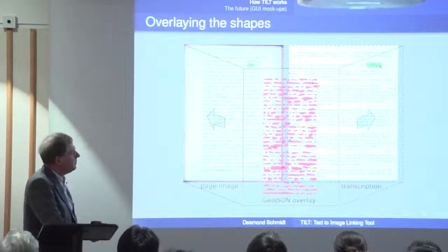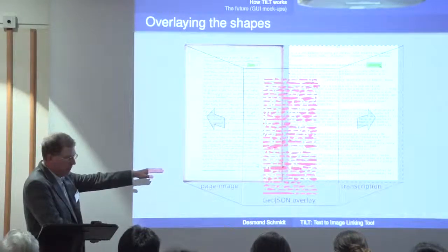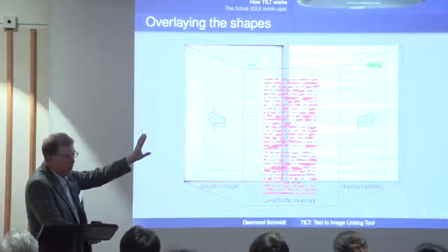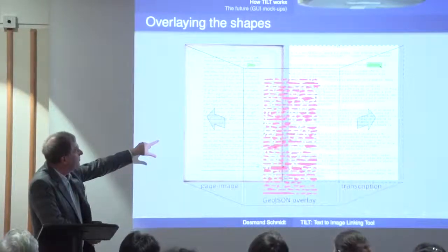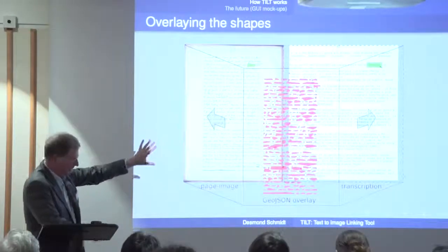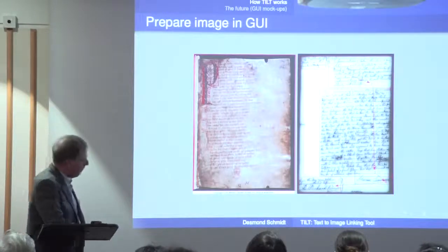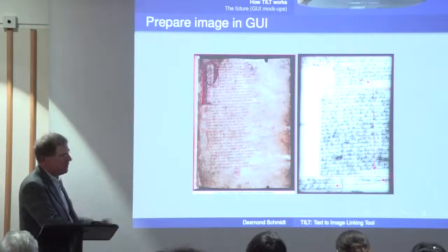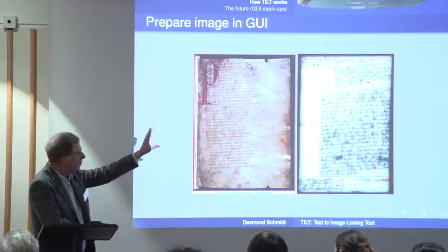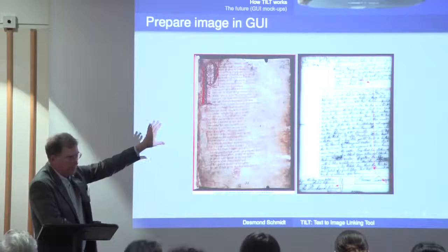Another big difference from other approaches is that we don't use embedded markup to record the links — we use a simple overlay. This is using GeoJSON, a geographical description format, which allows you to describe polygon shapes corresponding to words on the page, annotated with pointers to the text. So there's no alteration to the image or the text. For very complex cases you may have to segment the text into blocks — specifying an order one, two, three, four, five — for how the text shall be recognized as it appears in the transcription.